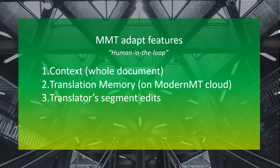The modern MT Adapt feature works on three levels. First, the context — that's on the whole document. Second, translation memory — a TM that you have on the modern MT cloud. And third, the translator's segment edit. So to make sure all this actually does something, I created a test method and will display the results in this video to see if it makes sense to use this and how to make the most out of it.